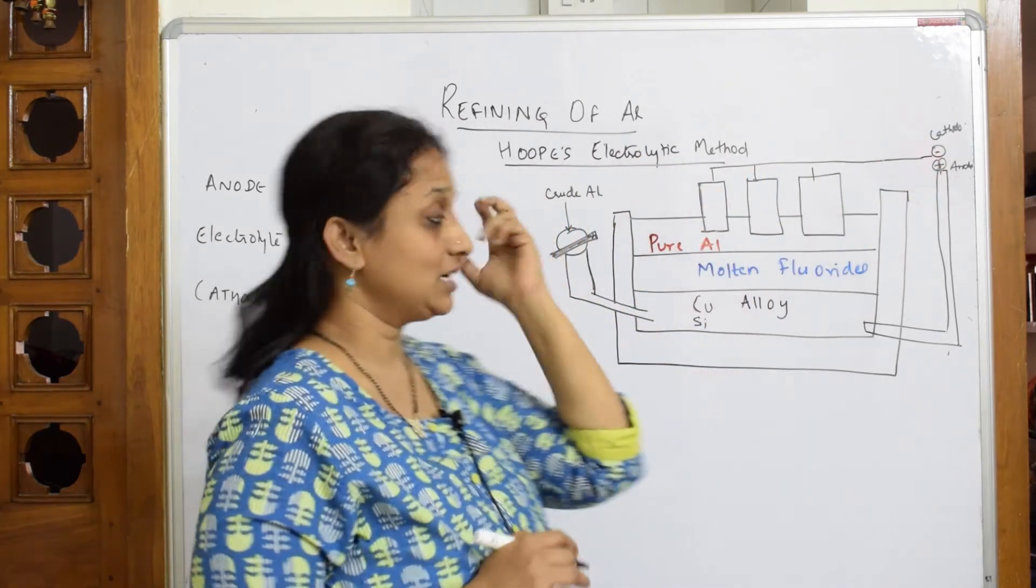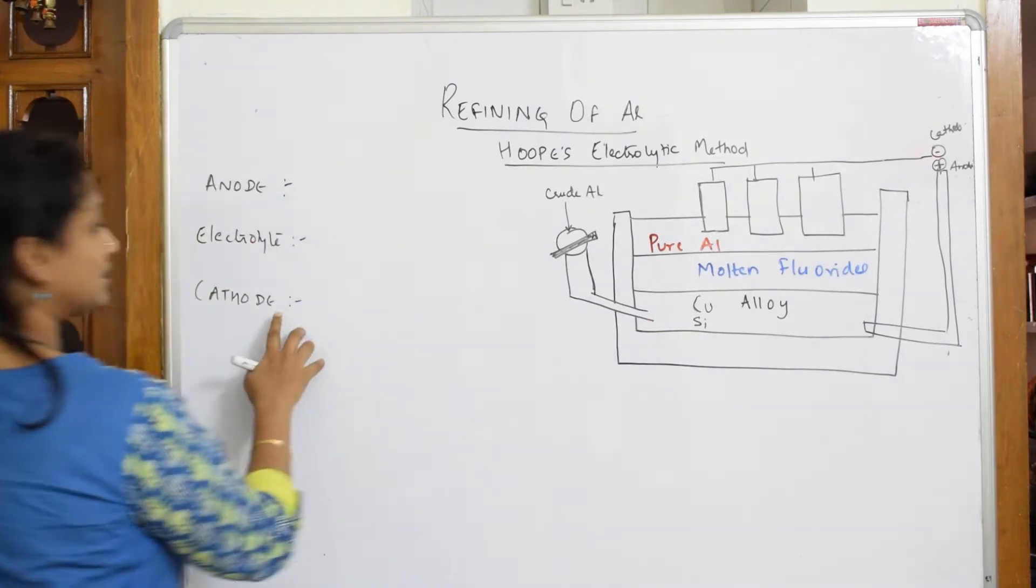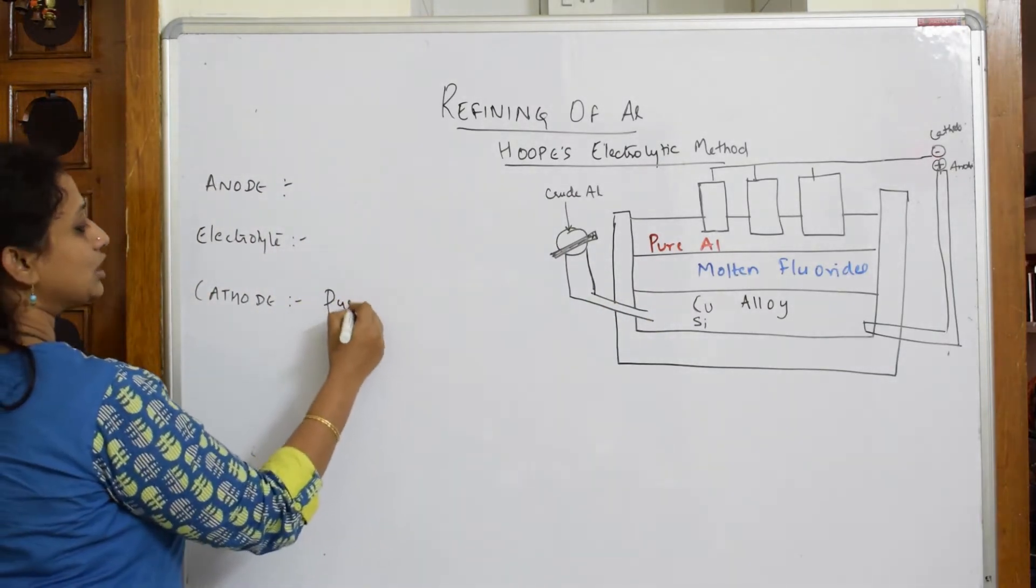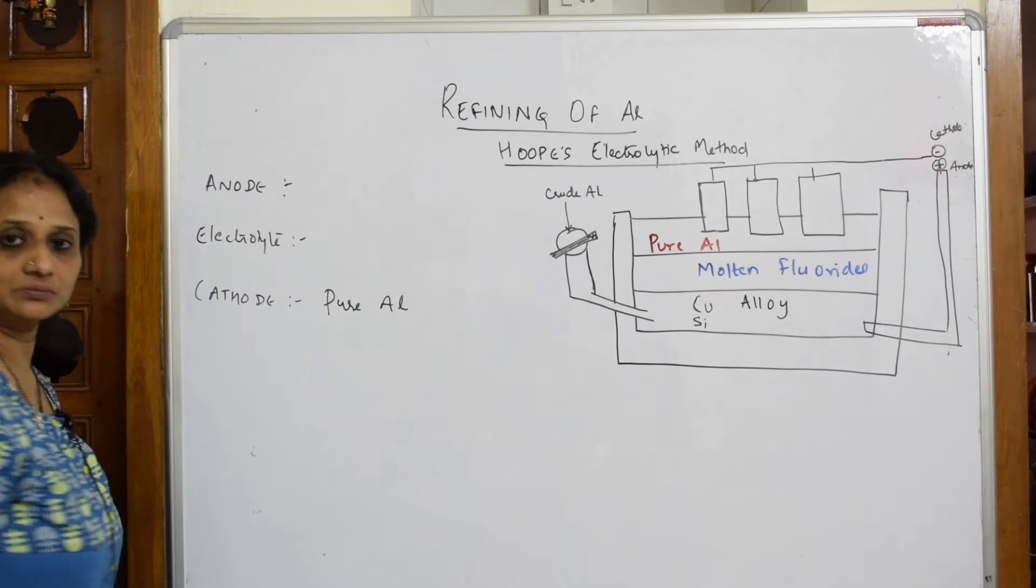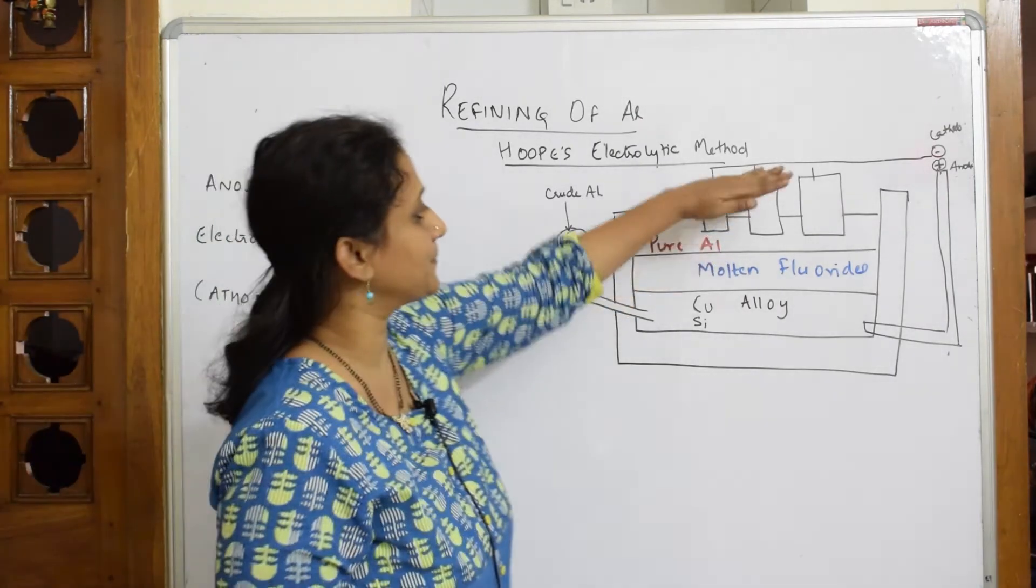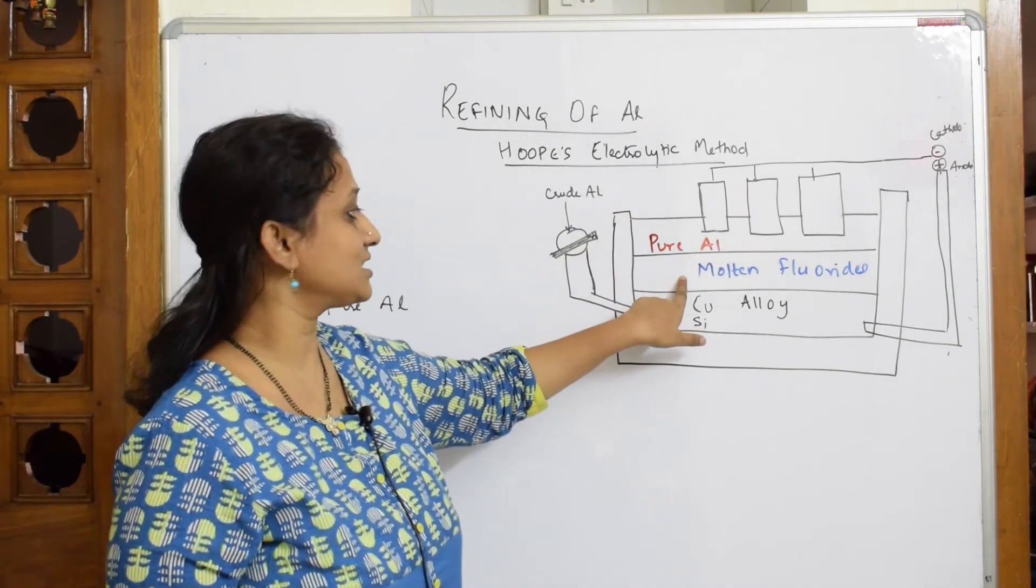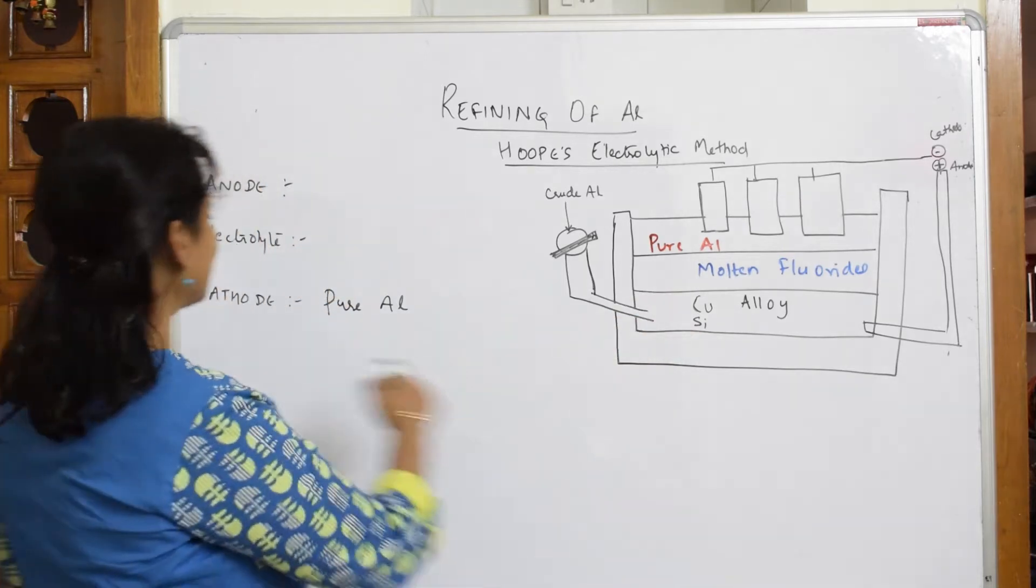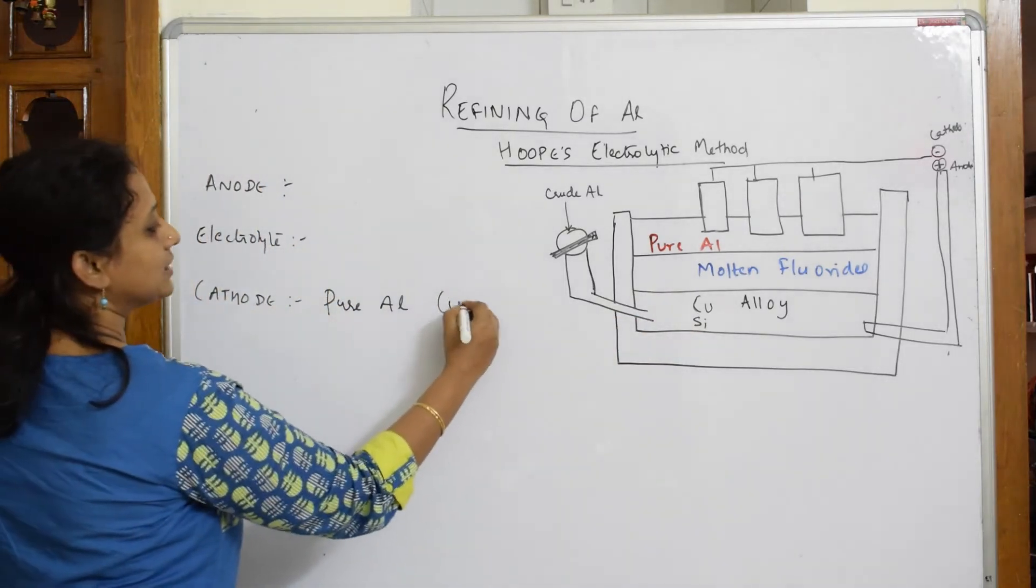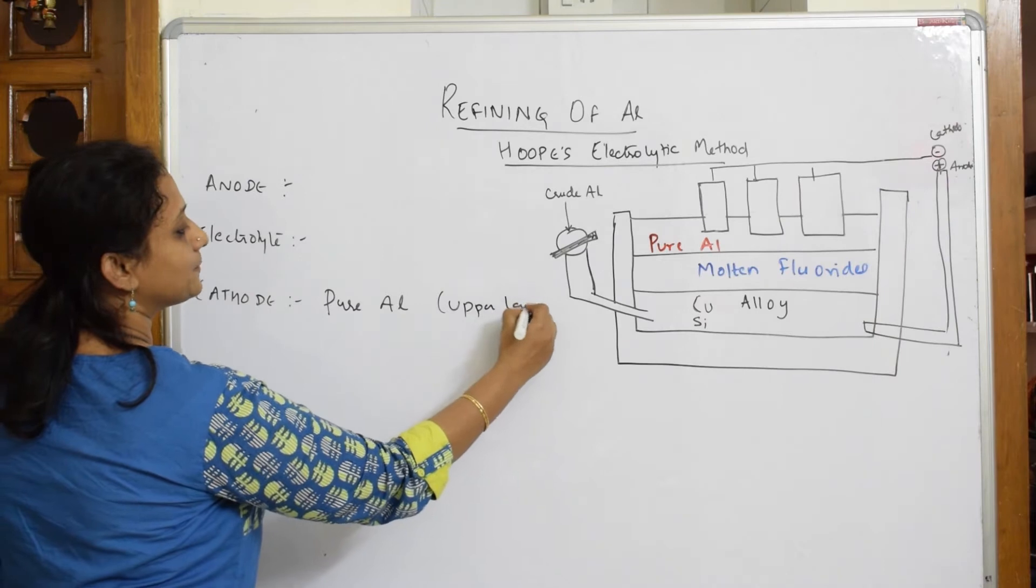Most important thing: in the cathode, your pure aluminum acts as a cathode. That's the first thing. Just see this layer. Now when I come down to the second layer, that is your molten fluoride. So let us write this as cathode upper layer. This will be better for you, upper layer.